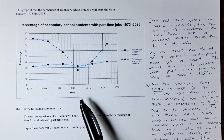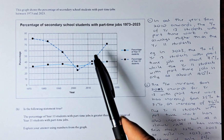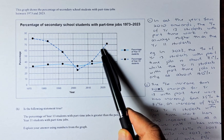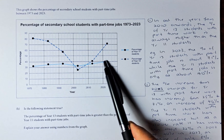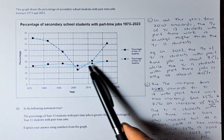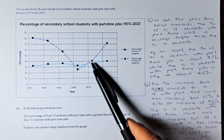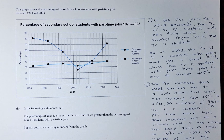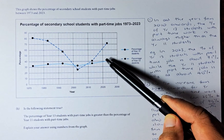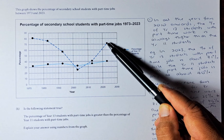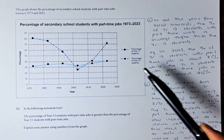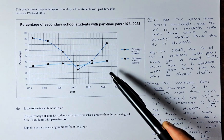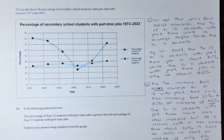In all years from 2010 onward you can see that Year 13 — shown by the dotted line — is higher than Year 11, shown by the solid line. For example, in 2023 the percentage of Year 13 students with part-time jobs is 71%, while Year 11 is at 40%. This clearly shows that Year 13 has more part-time jobs than Year 11.